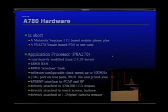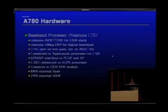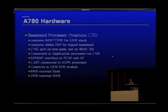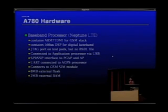There's an SPI/SSP interface to PCAP and the baseband processor. The phone has a 320x240 LCD display, directly attached touch screen, buttons, and a 1.3 megapixel camera. The baseband processor contains an ARM7TDMI for the GSM stack and a 56620 DSP for digital baseband. It has a JTAG port, though such chips aren't publicly documented so there's no BSDL file. It connects to the application processor via USB, and via UART to the AGPS module. It has 8MB external flash and 2MB external RAM.